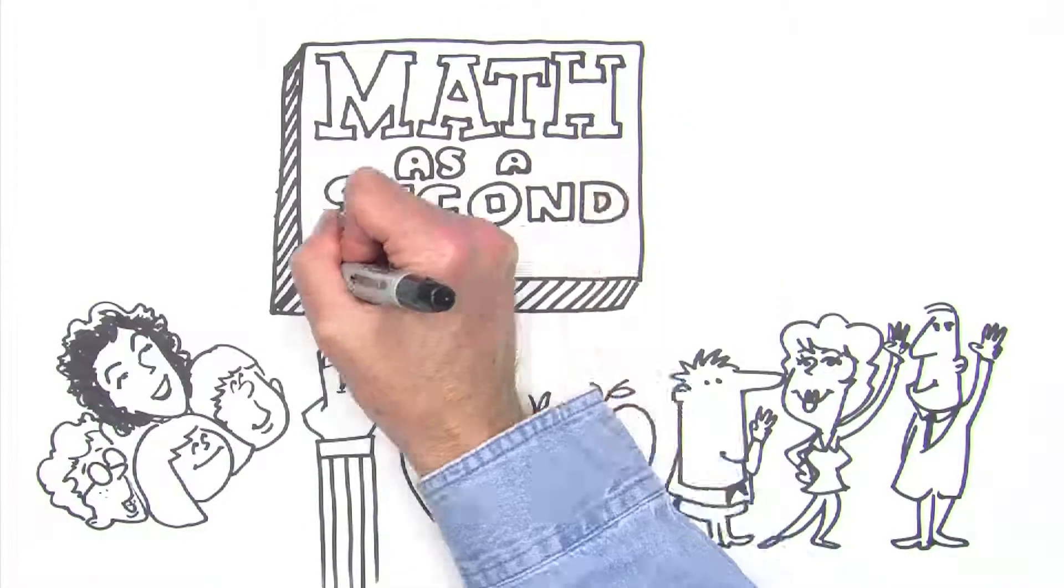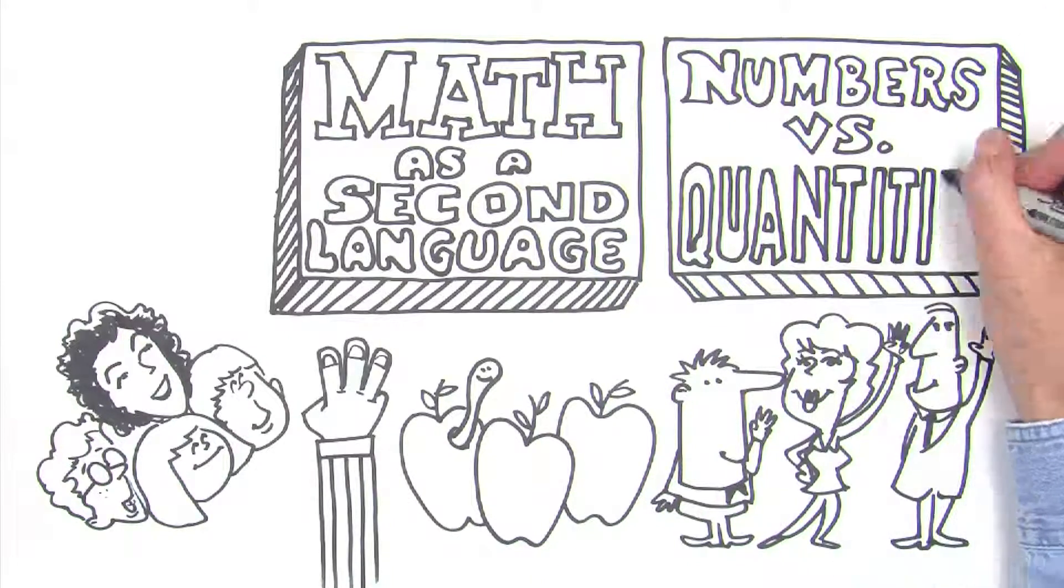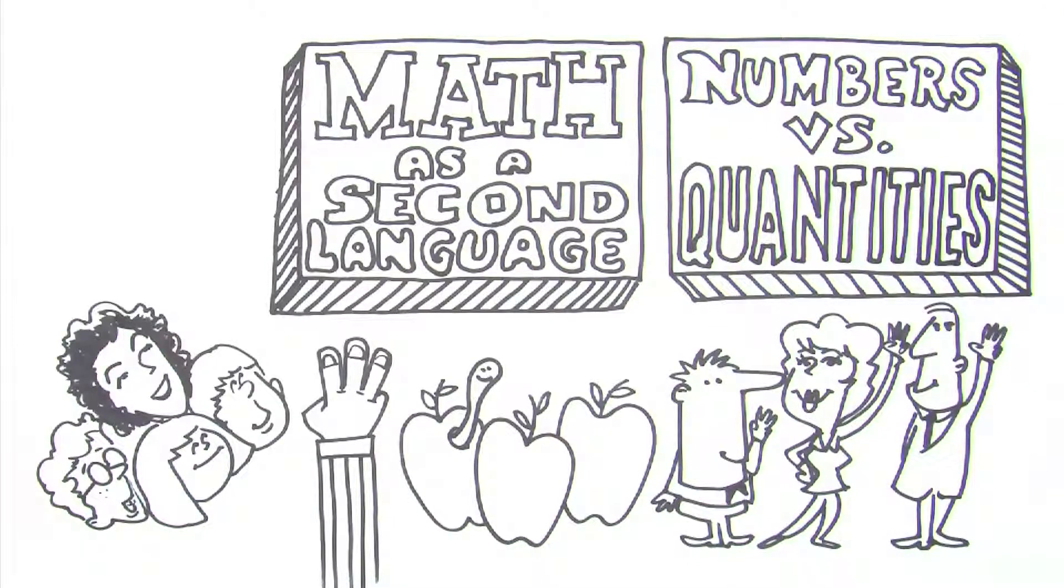Three fingers, three apples, three people. This remarkably simple concept permeates all of arithmetic and makes it much easier for students to internalize the subject.